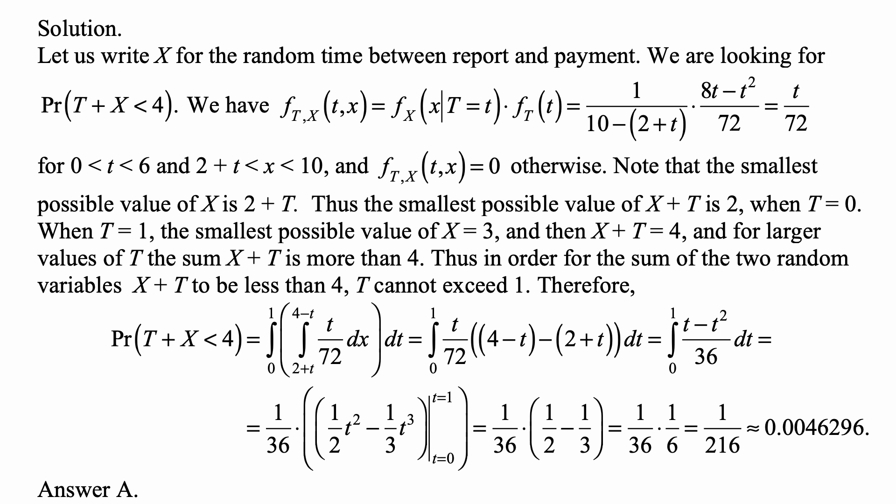So we take that integral from 2+t to 4-t of t/72 with respect to x. Well, it's just the integral of a constant, so it's going to be the length of the interval from 2+t to 4-t times t/72.